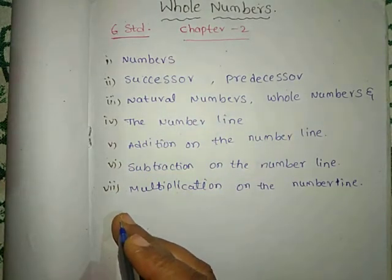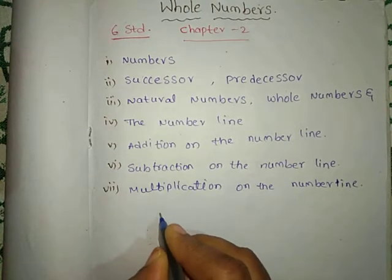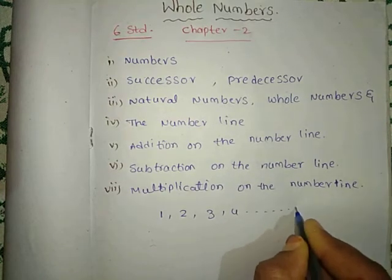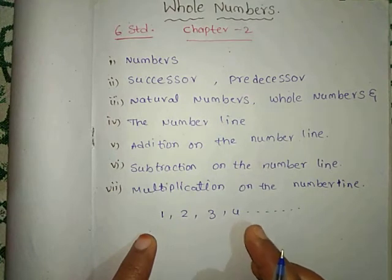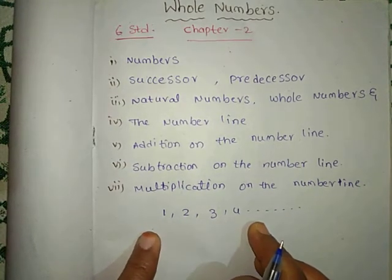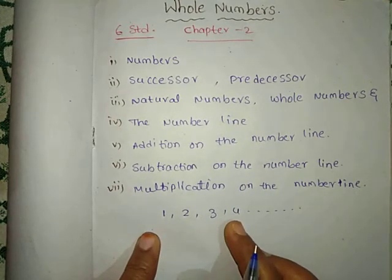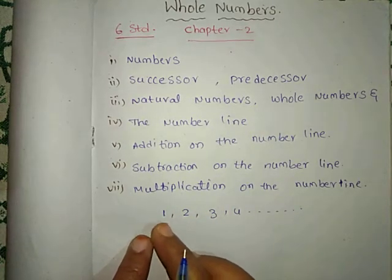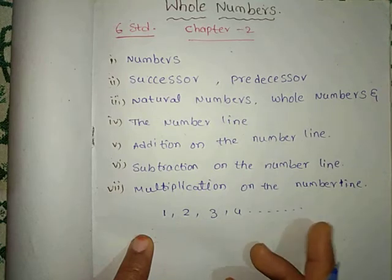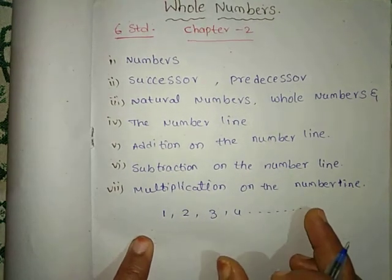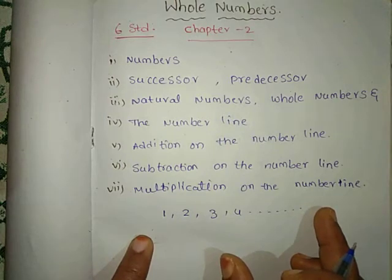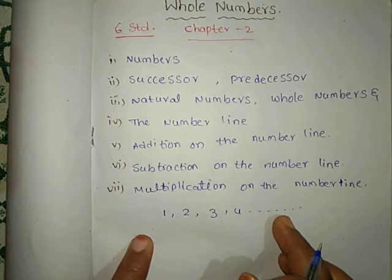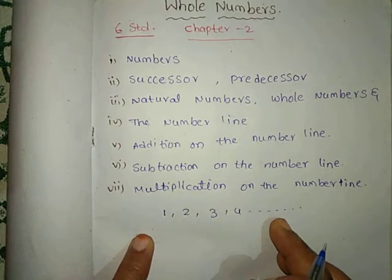Generally, we call numbers 1, 2, 3, 4, and so on. We know these already — these are called numbers. These numbers come naturally. When we start the counting numbers 1, 2, 3, 4, and so on, some mathematicians call them natural numbers. Why? Because they come naturally. That's why we call them natural numbers.